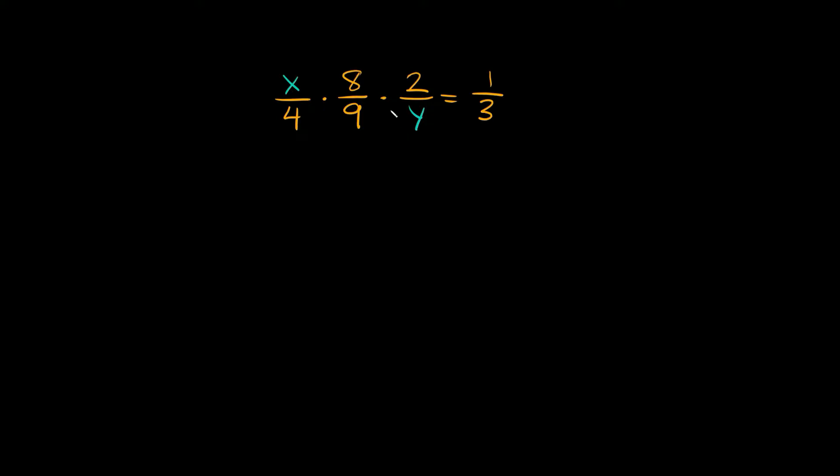So the first thing we're going to do here is just multiply everything together. So we have x over 4 times 8 over 9 times 2 over y and we're saying that that's equal to one third. So we're going to multiply the whole left side together.